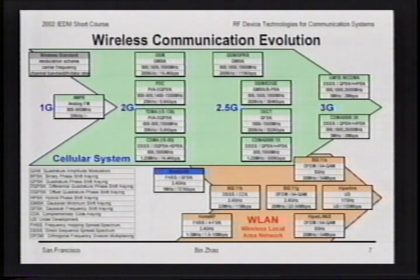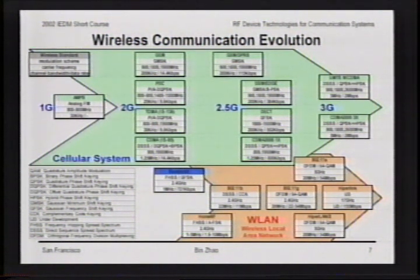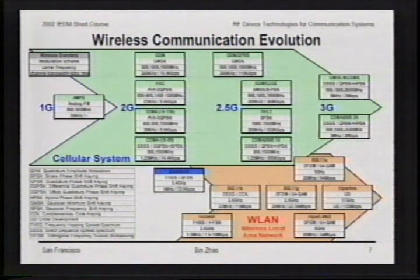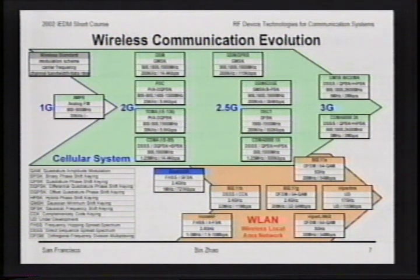This slide shows the wireless communication evolution for cellular systems and wireless LAN. Each box shows the corresponding wireless standard name, modulation scheme, RF carrier frequency, channel bandwidth, and user data rate. Two trends are clear: first, as data rate increases, channel bandwidth increases—consistent with Shannon's theorem. The challenge is that existing narrow band wireless RF technology may not work well for increased channel bandwidths in the future. Second, for new emerging applications, RF frequency must go to higher unused frequency bands to avoid interference and achieve desired performance.